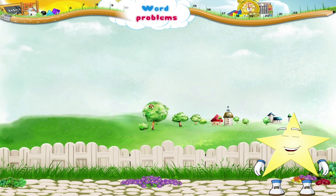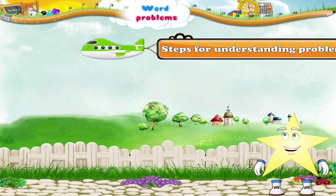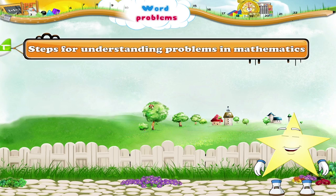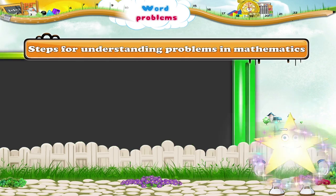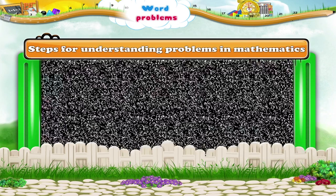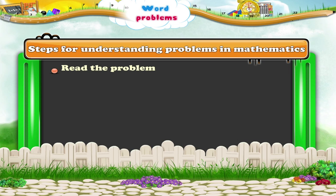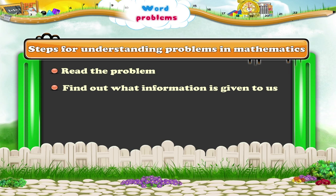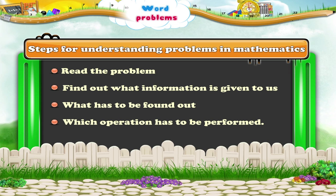Stari, we call this Understanding Problems in Mathematics. We first read the problem, then find out what information is given to us, and then understand what has to be found out and which operation has to be performed.